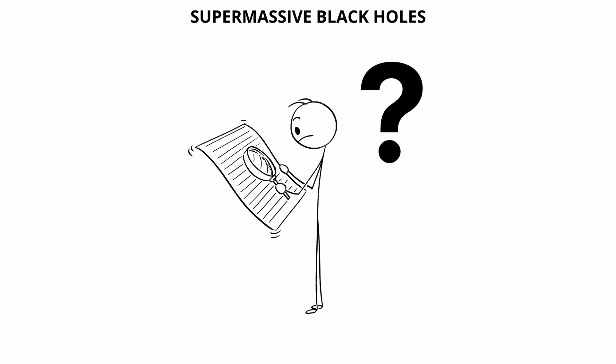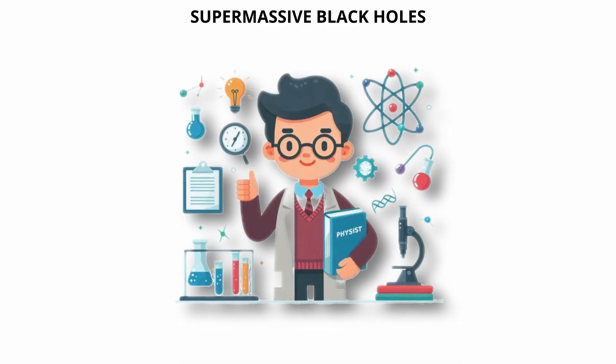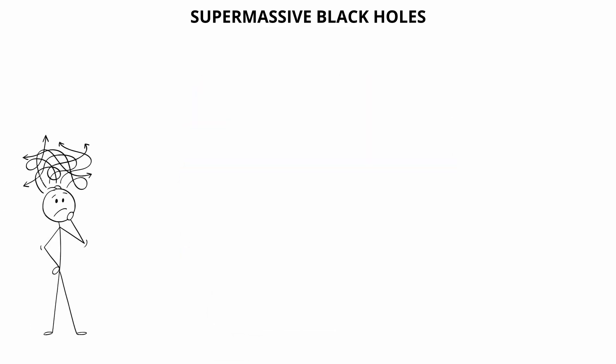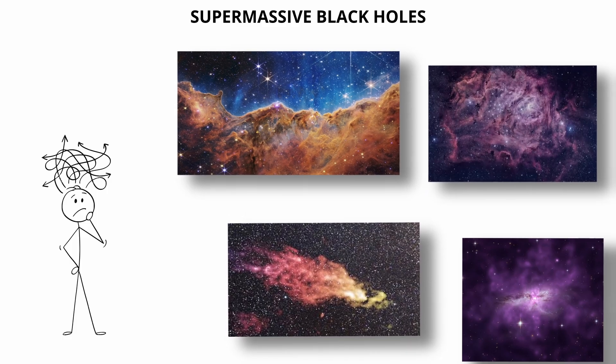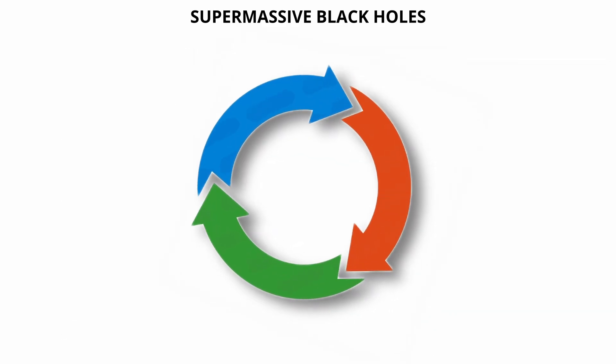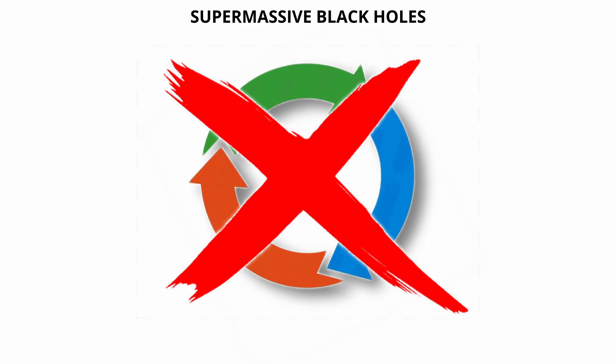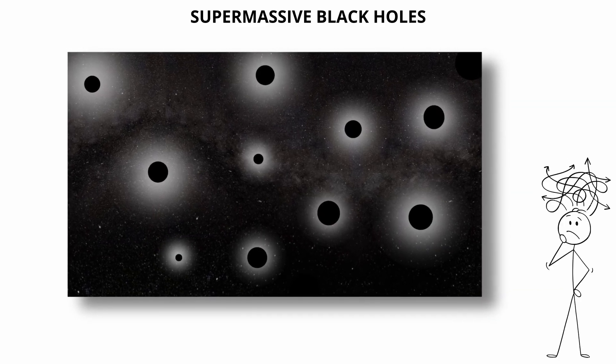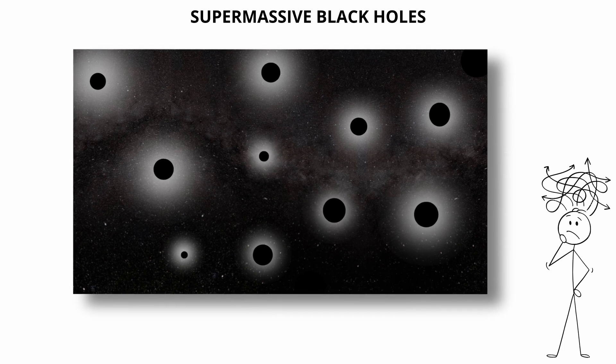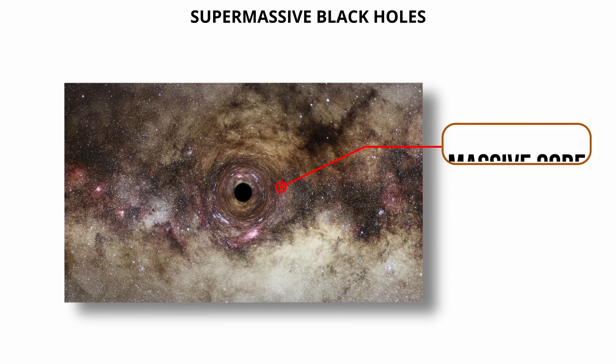The origin of supermassive black holes is still an area of active research, but there are several leading theories. One possibility is that they formed from the direct collapse of massive clouds of gas in the early universe, bypassing the traditional stellar life cycle. Another hypothesis suggests that smaller black holes, such as stellar or intermediate types, merged repeatedly over time, eventually forming a supermassive core.